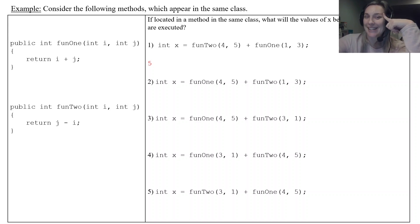Okay so another example. Fun one takes a four plus five. Fun two takes a three minus one. So this is a nine and a two and we add them together and we get eleven.